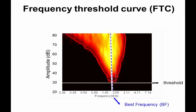Let's finish what we said last week when we talked about the auditory nerve. I ran out of time when we were talking about the receptive fields — that's what they're called — of the auditory nerve fibers. We've got about 30,000 auditory nerve fibers in each ear. Each has a receptive field: a range of frequency and amplitude to which they respond. That's what we call the frequency threshold curve or frequency threshold field.